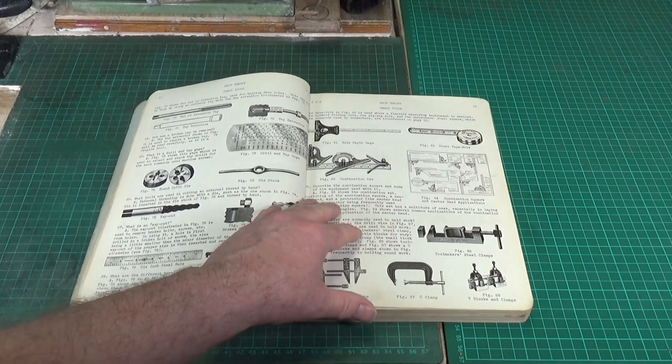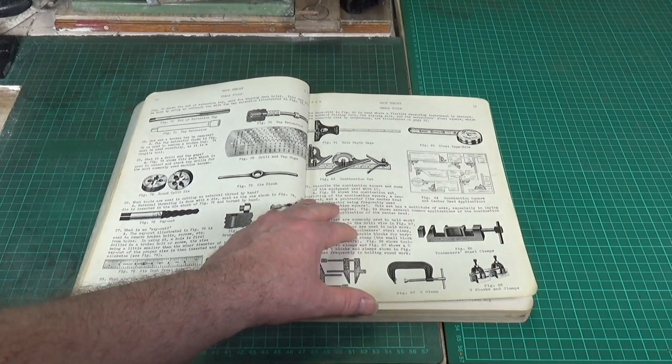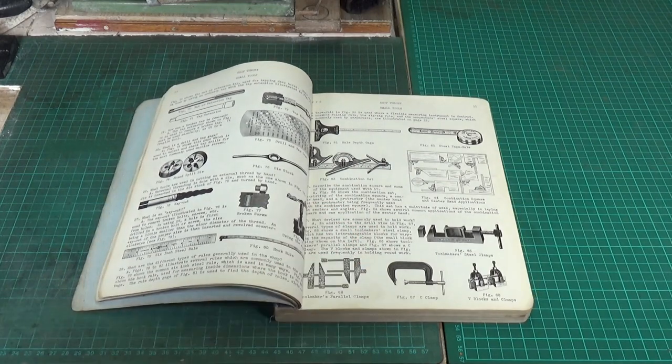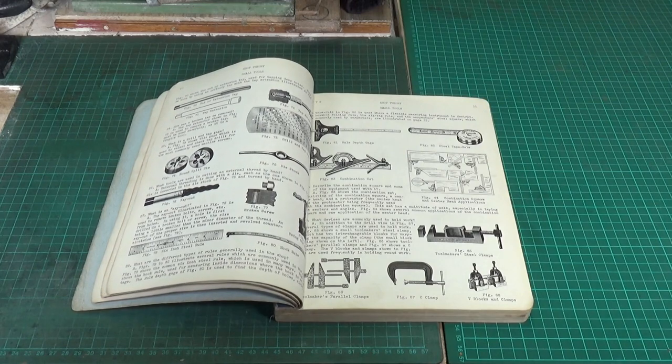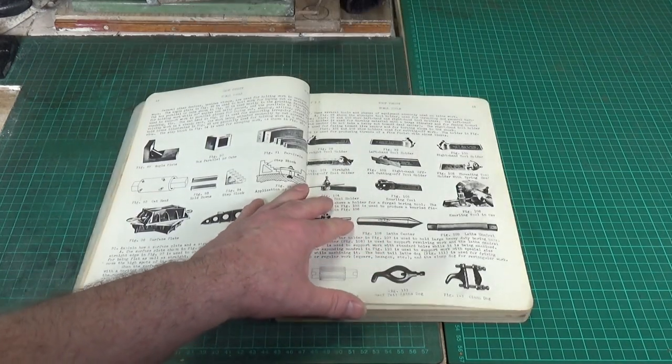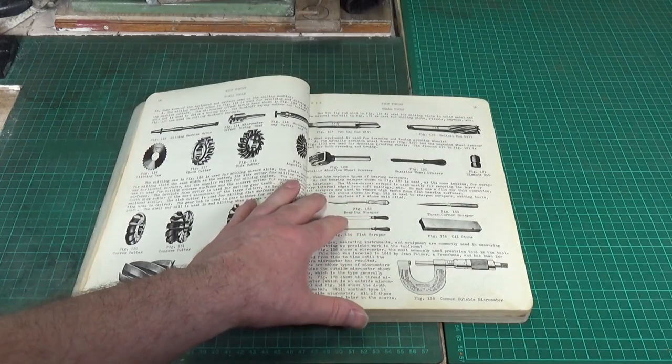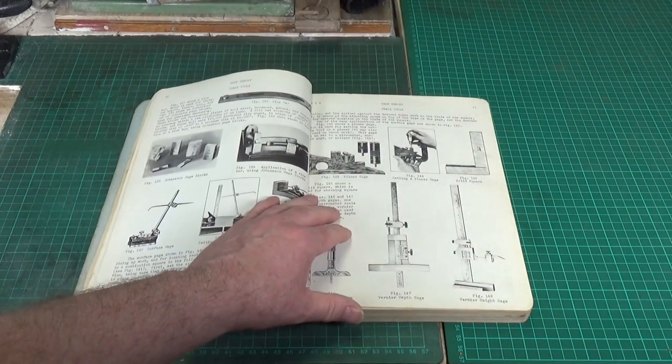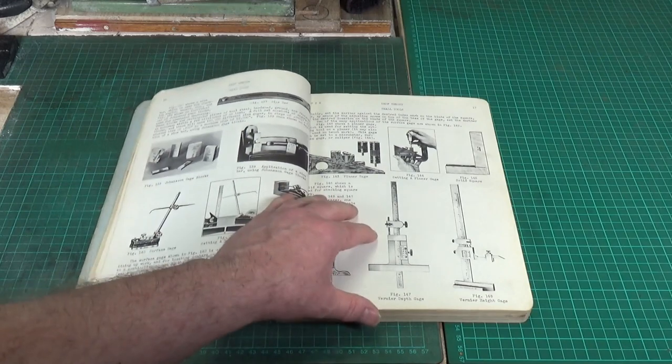As you can see, it starts off with small tools and literally goes into very, very basic stuff like what is a circle, how do you define a circle, and things like that. You might think, well, do you need to know this? But some of it is actually really bloody useful, and it's really, really well illustrated.